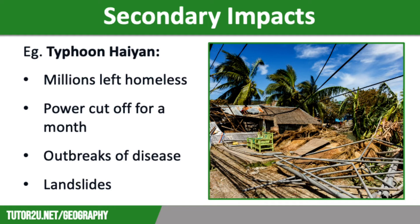The secondary impacts of Typhoon Haiyan included millions of people being left homeless and without a source of income. Flooding led to landslides and blocked roads, cutting off aid to remote communities, and power supplies in some areas were cut off for a month. Aid efforts were slowed down because of weeks of disruption to ferry services and airline flights. There were also shortages of water, food and shelter, which led to outbreaks of disease.